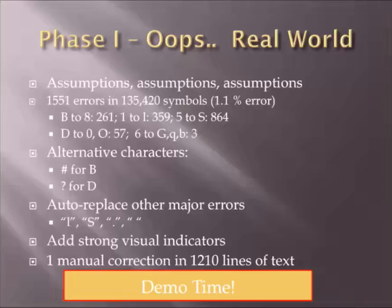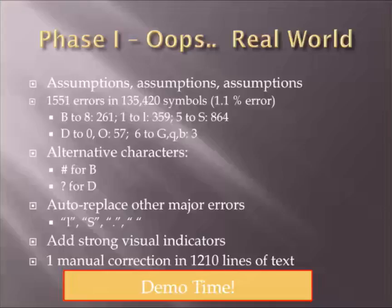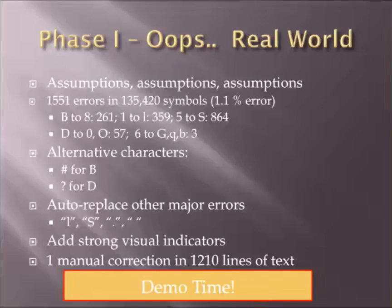When I actually went to use this to drop my DLL, I discovered it didn't work as well as I thought — about 1% error, which is still a lot of problems to fix. I discovered OCR error patterns: B becomes 8 a lot, 1 becomes L, 5 becomes S, D becomes 0 or O, and 6s get changed. Some of these are bad — B to 8 is bad because both are valid hex. So I came up with alternative characters: a hash mark for B and a question mark for D, since those don't look like anything else and OCR very well. With those fixes, I only had one manual correction in 1,210 lines of text — about 19 pages. It worked really well.